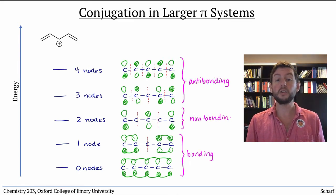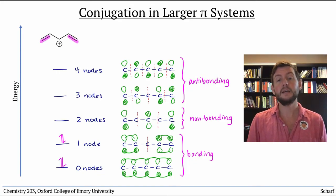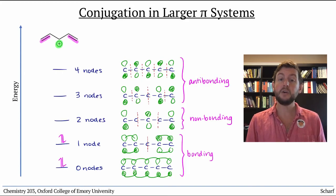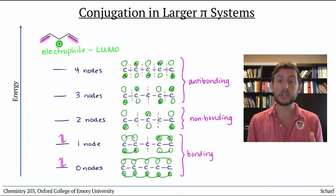There are four total electrons in this system, just the two from each pi bond in the Lewis structure. Since this is a cation, we know it will act as an electrophile, so we're most interested in its acceptor orbital, its LUMO.